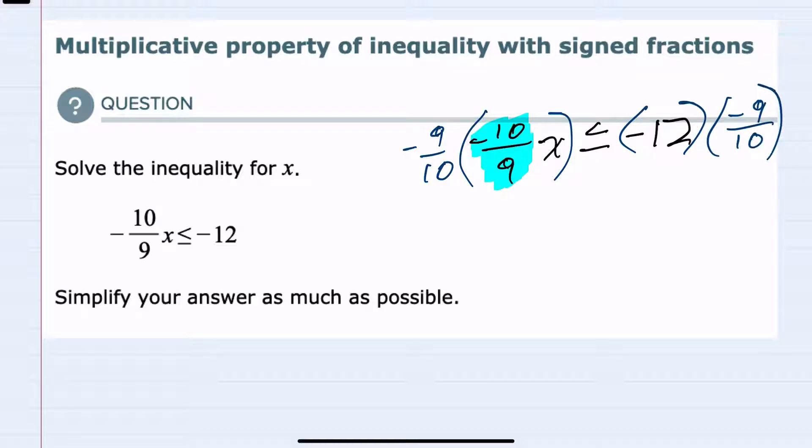A couple of things happen here. First, on the left hand side, the nines cancel, the tens cancel, the negative times a negative is a positive, so that results with the x.